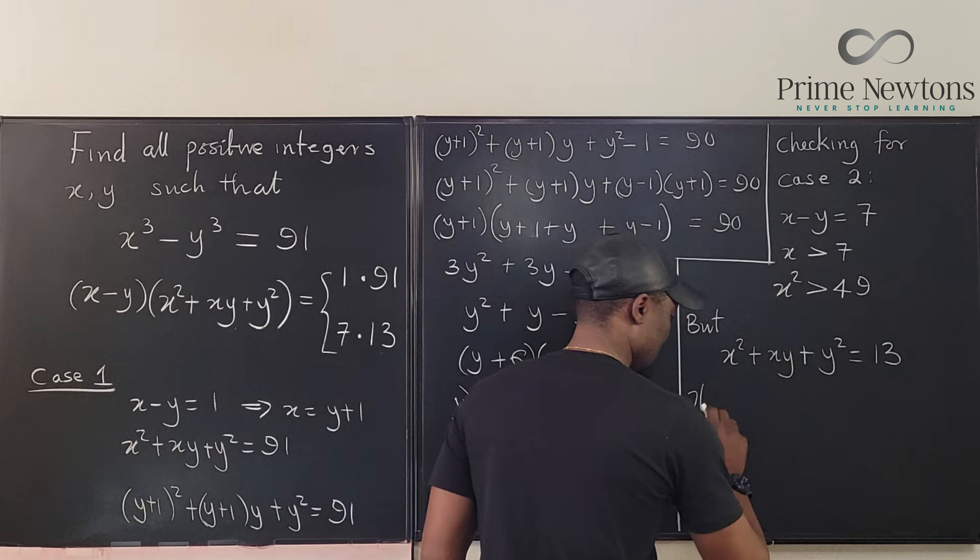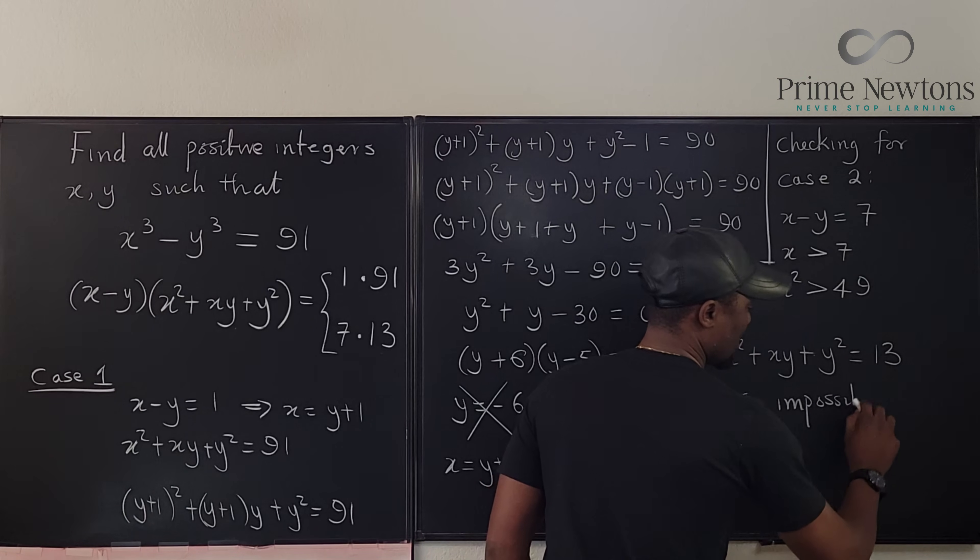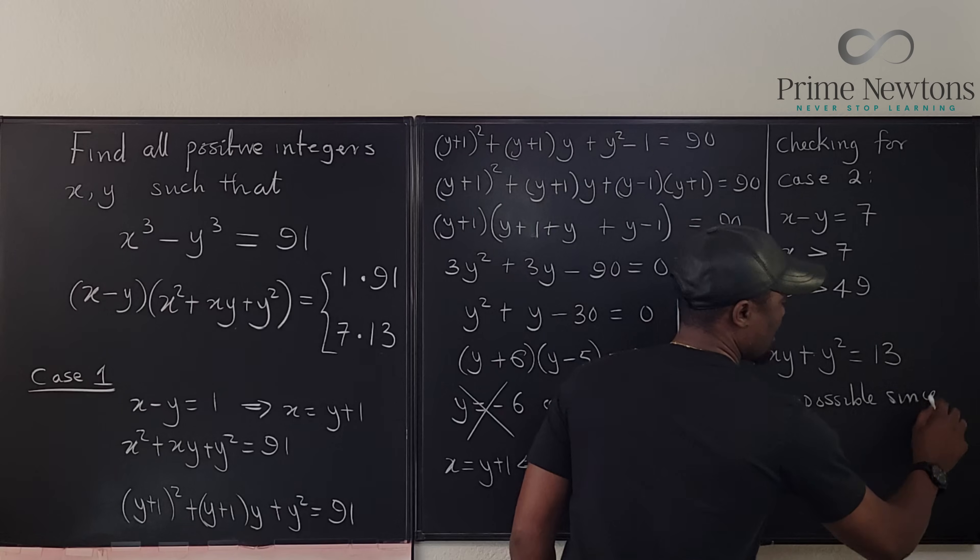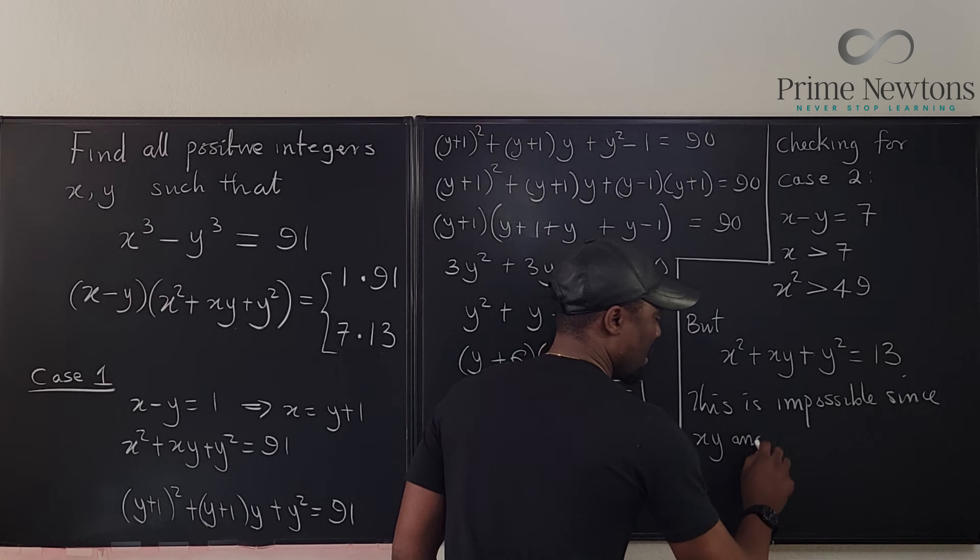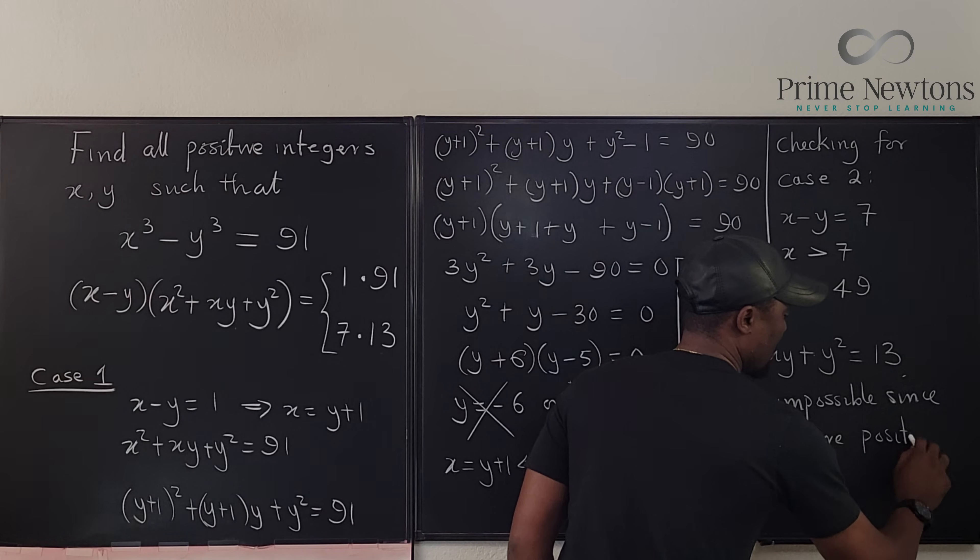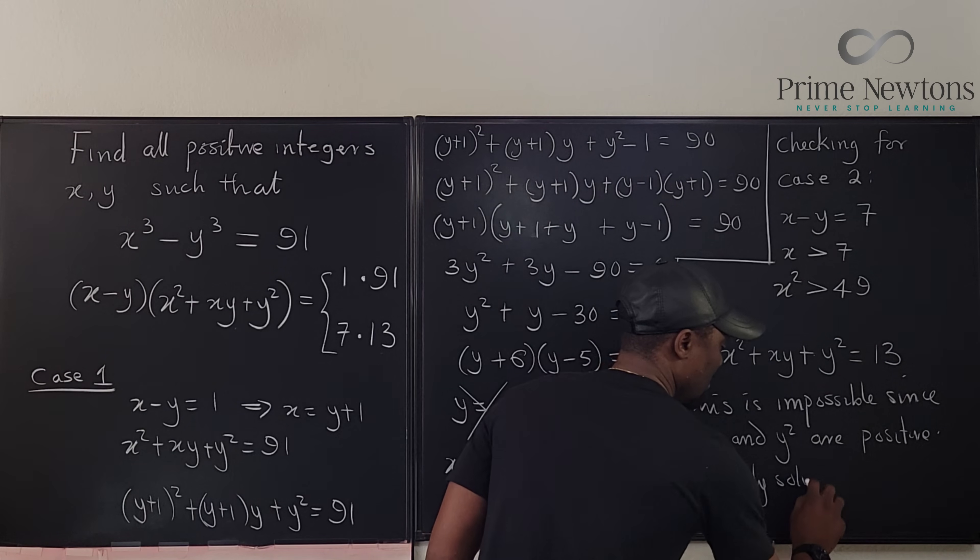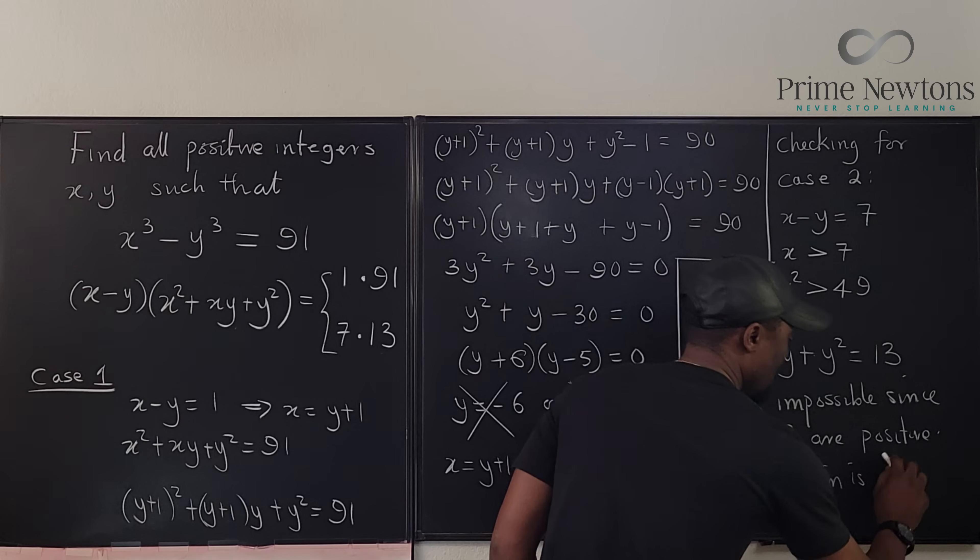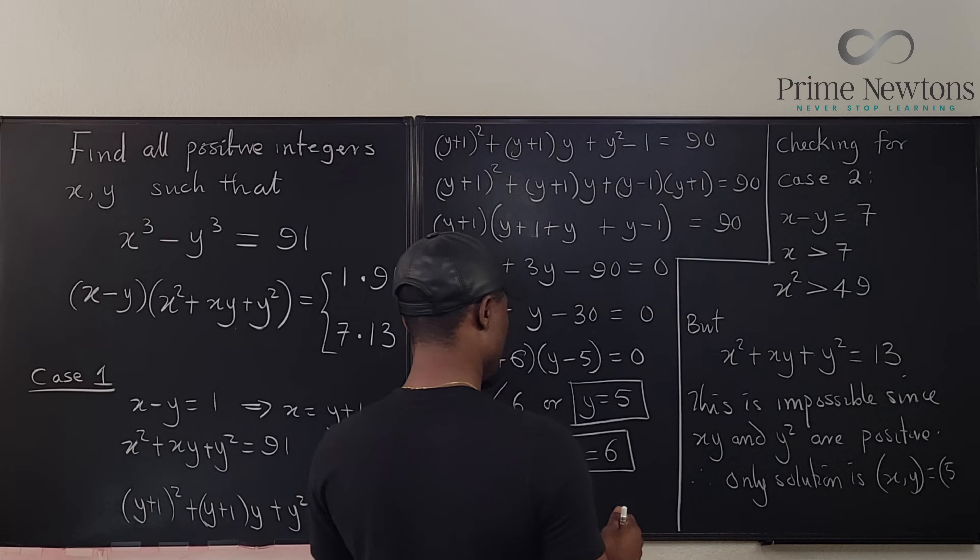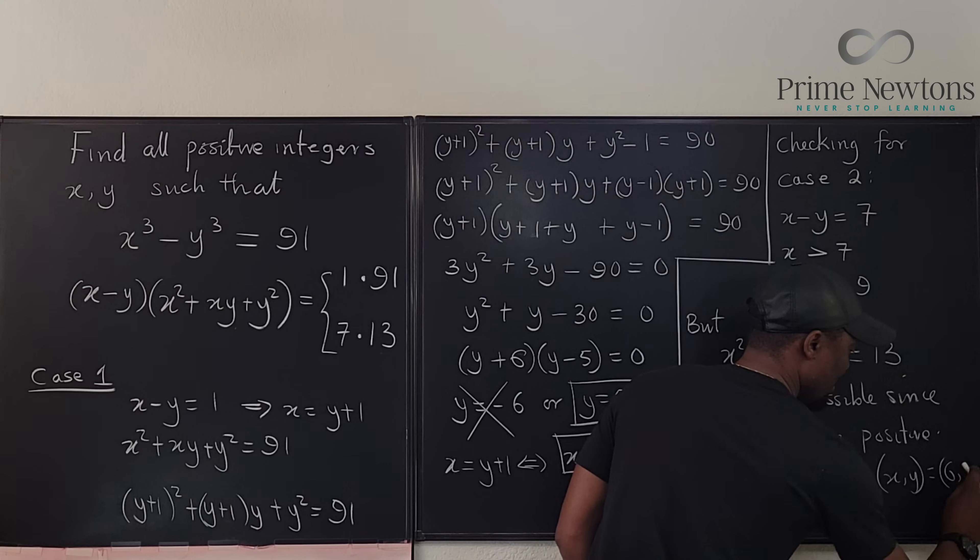So this is impossible since xy and y squared are positive. Therefore, the only solution is x equals 6 and y equals 5. Hope you can see it here. 6, 5.